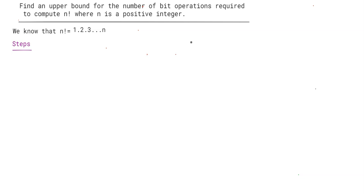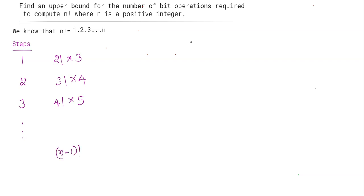This product can be found using a number of steps. In step 1 we find the product 2 factorial × 3. In step 2, the partial product from step 1 — that is 3 factorial — is multiplied by 4. In step 3, 4 factorial is multiplied by 5, and so on. This process stops when we find the product (n−1) factorial × n, which is obtained in step n−2.